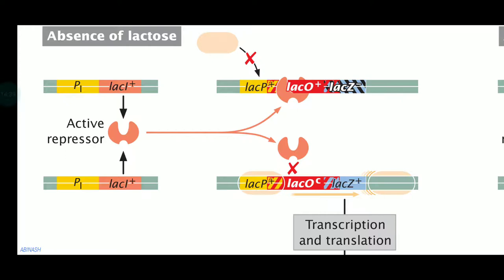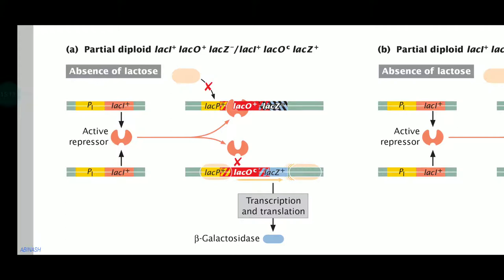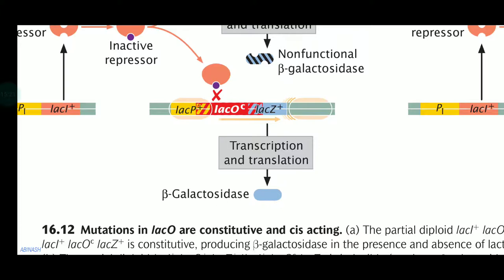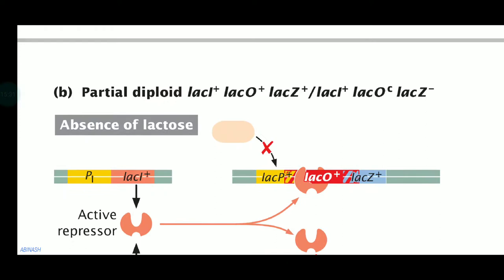In the absence of lactose, both lac I plus genes — in the bacterial chromosome and in the plasmid — are in good condition, not mutated, and fully functional. The active repressor can prevent RNA polymerase from proceeding. However, we have a defect: the bacterial chromosome has a mutated lac Z minus, so in both conditions we will have a non-functional beta-galactosidase from the bacterial chromosome, but a functional one from the plasmid.